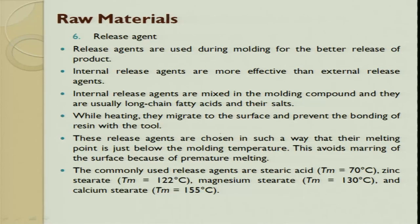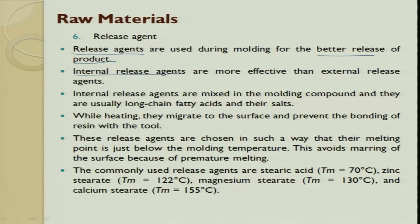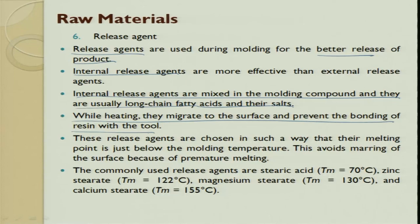Releasing agents are used for better release of the product without surface damage. In composites, even a small surface damage can exponentially deteriorate product quality. Internal releasing agents — mixed within the mold compound — are more effective than external ones. They are typically long-chain fatty acids and their salts. During heating, they migrate to the surface and prevent bonding of the resin with the tool.